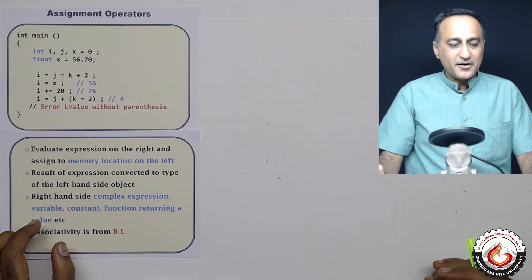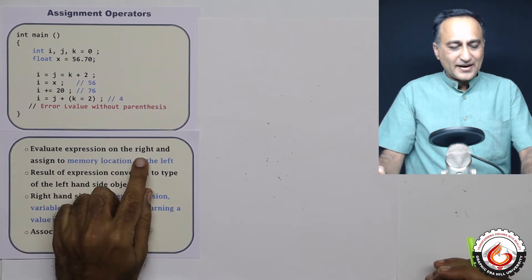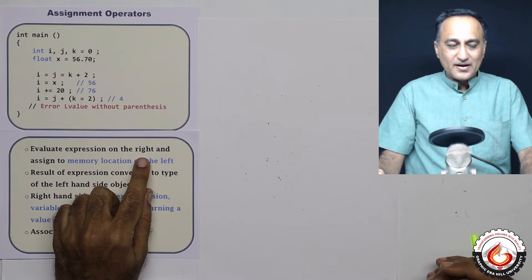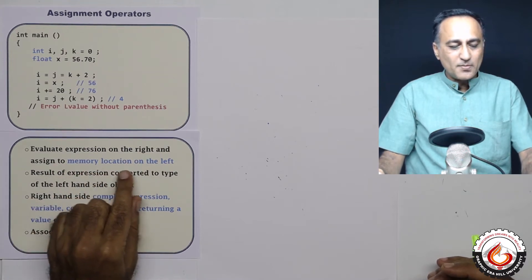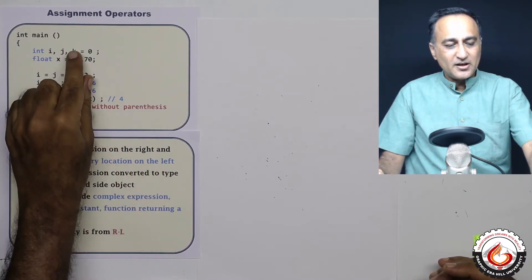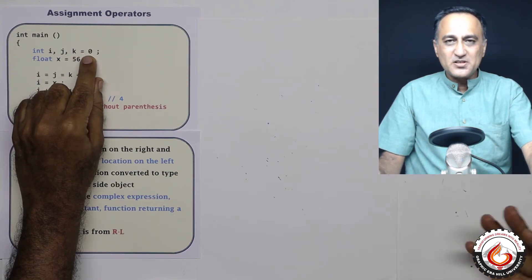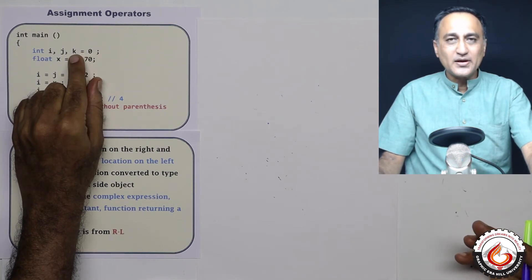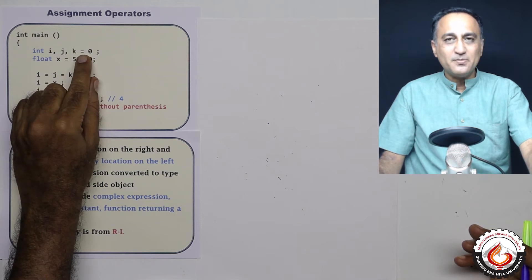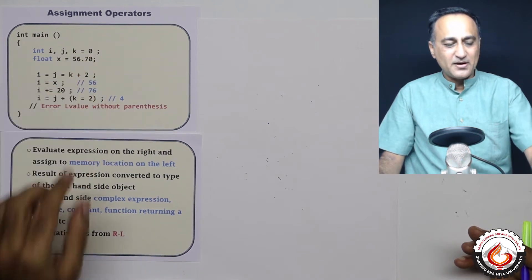So what does an assignment really do? The expression on the right is evaluated and the value is assigned to a memory location on the left. Here if you see, the expression on the right side happens to be just 0, which is assigned to k. So this is an example of a simple expression and assignment statement.